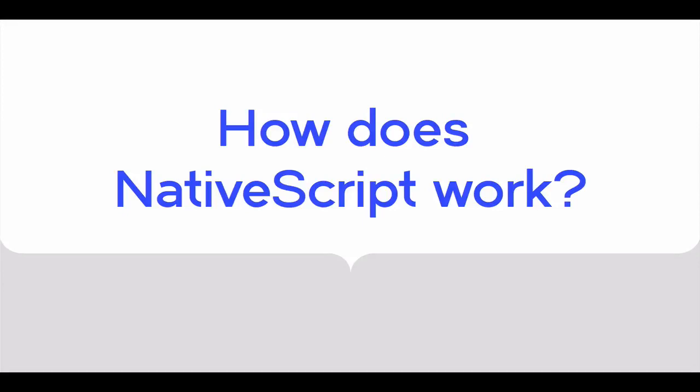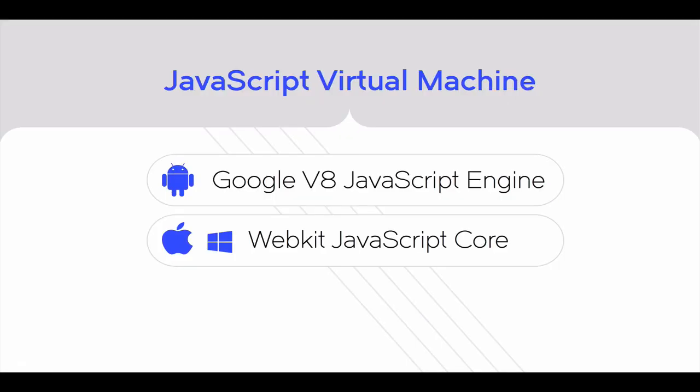NativeScript is not just a set of JavaScript libraries, but more of a runtime that enables you to call native APIs for Android, iOS, and Windows Phone. NativeScript uses a pre-packed JavaScript virtual machine — for Android it is Google's V8 JavaScript engine, and for iOS and Windows Phone it is WebKit's JavaScript Core.